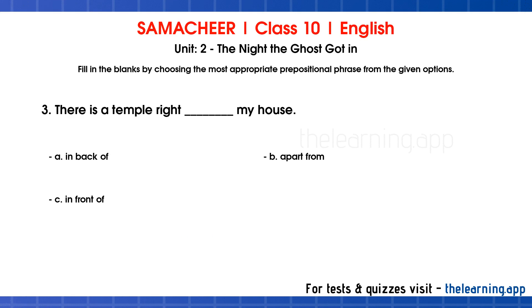Question 3: There is a temple right — my house. Options are: a. In back of, b. Apart from, c. In front of. Correct answer is c. In front of.